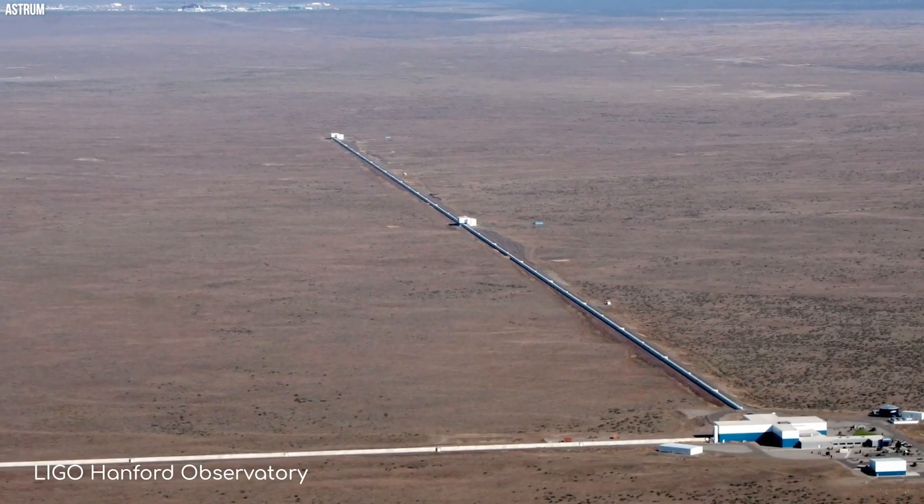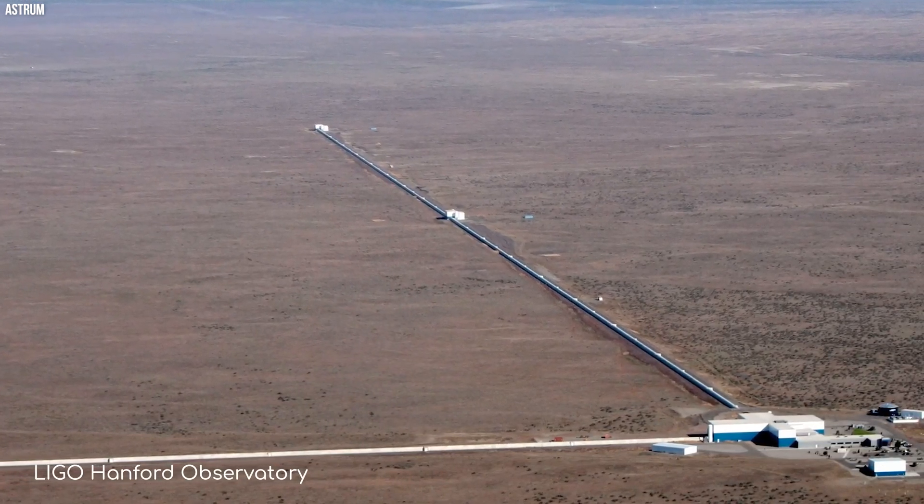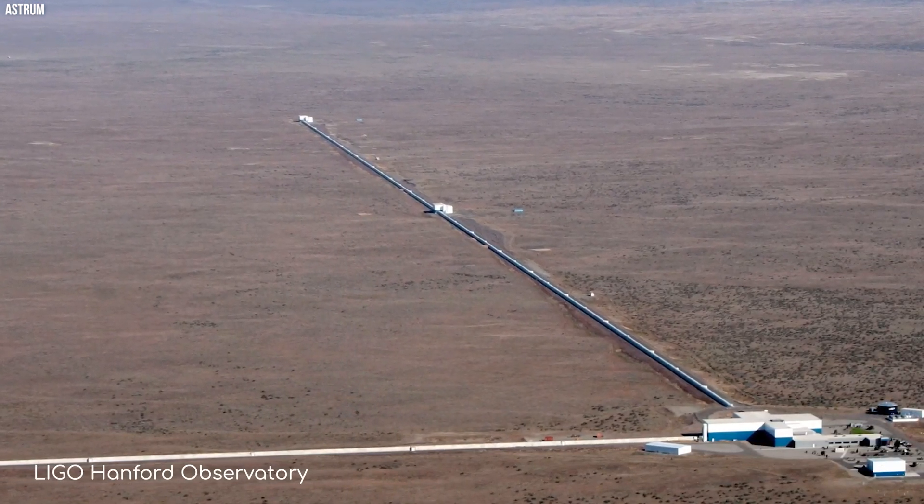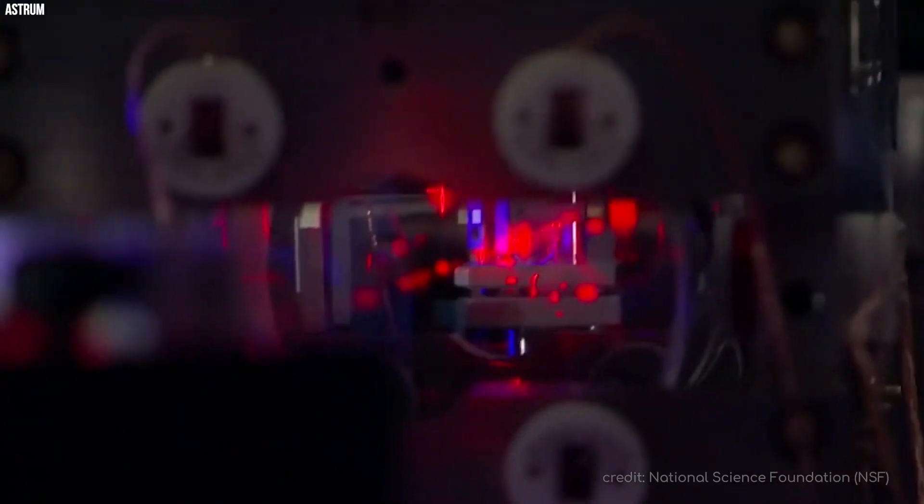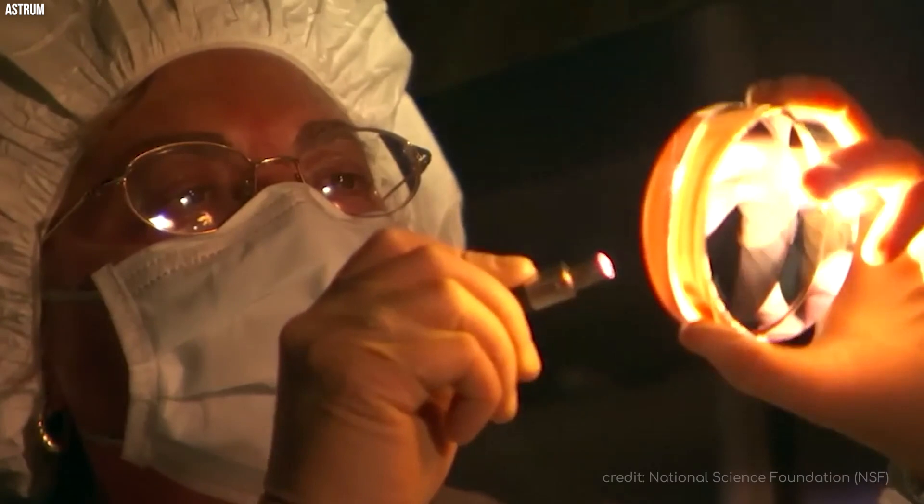Scientists, while aware that most galaxies harbor supermassive black holes at their cores, remain uncertain about the growth mechanisms of these cosmic behemoths. One proposed mechanism involves a series of mergers between progressively larger black hole binary pairs.